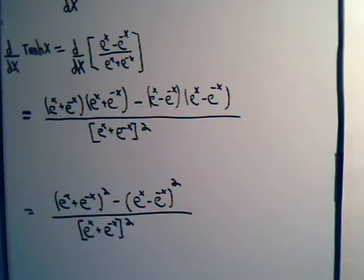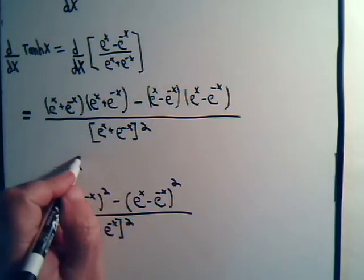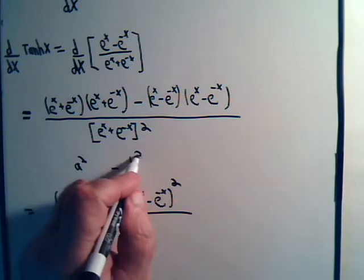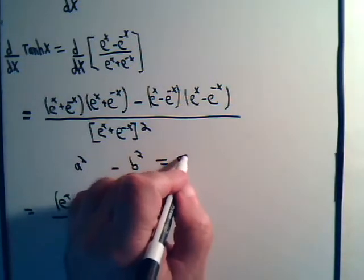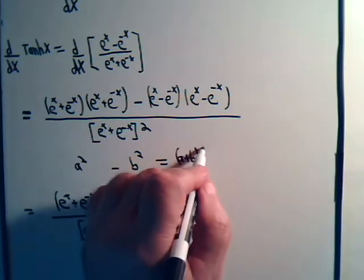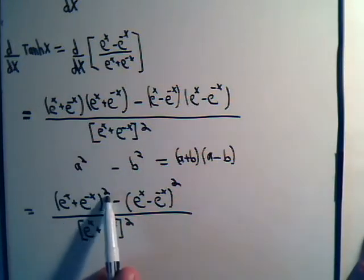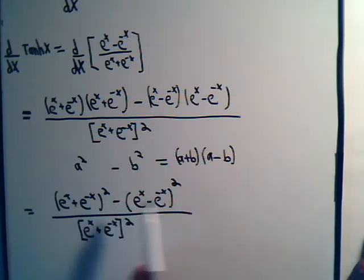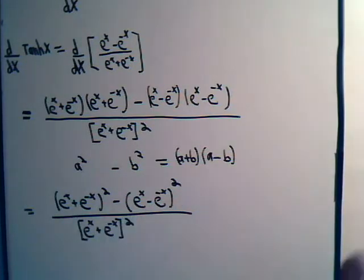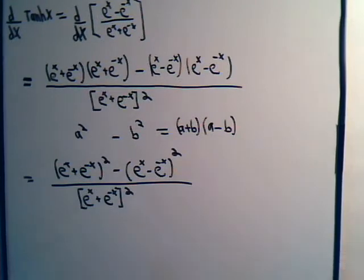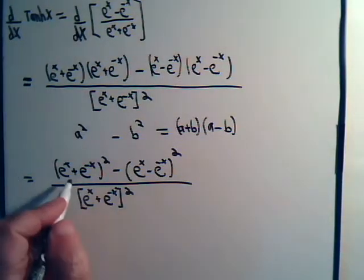Up here we have a difference of two squares. Let's remember how that goes: if we have a squared minus b squared, that equals a plus b times a minus b. So we can write the numerator without the squares by factoring it as a plus b times a minus b.